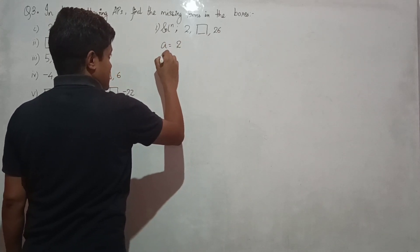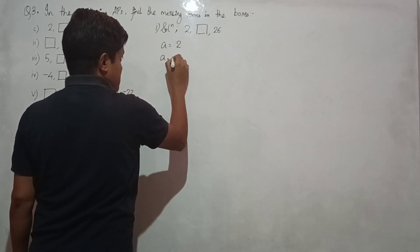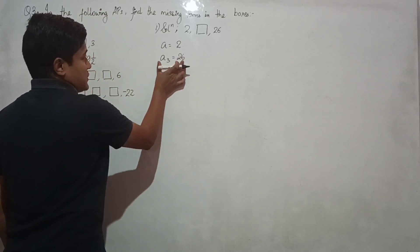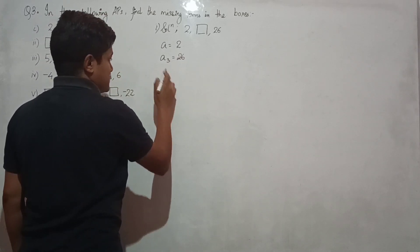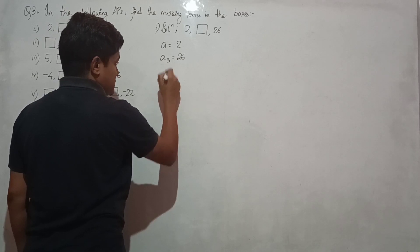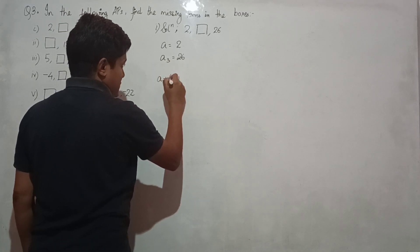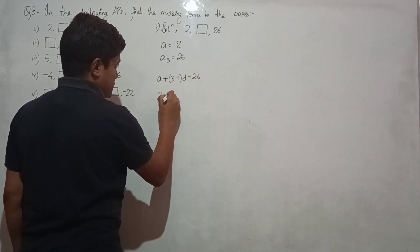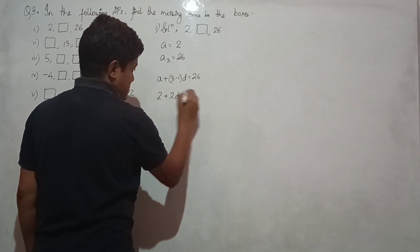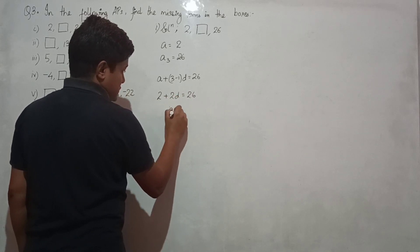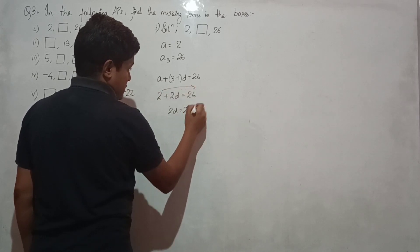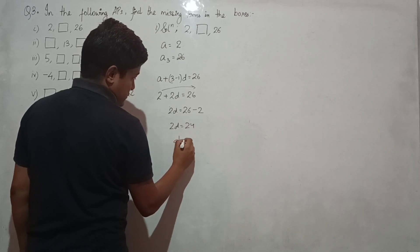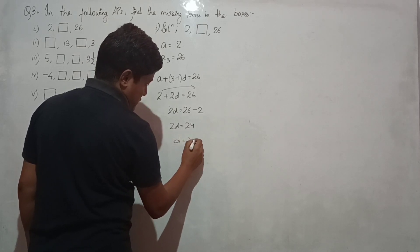The third term equals 26. So we apply the formula: a third term means a plus (3 minus 1)d equals 26. First term is 2, so 2 plus 2d equals 26, giving 2d equals 24, and d equals 12.